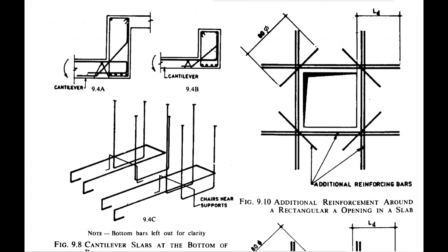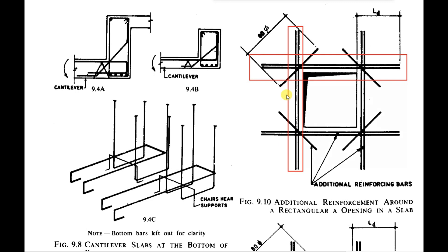Now let's discuss the conditions with the diagram given in the code. The reinforcement is provided on both sides of the opening. The first condition is that this reinforcement needs to be one half of the principal reinforcement — the main reinforcement intersected by the opening. At least one half of that area of steel needs to be placed parallel to the main reinforcement on each side of the opening, extended up to the development length LD beyond the edges of the opening.